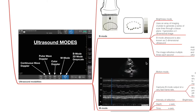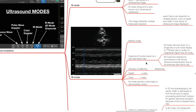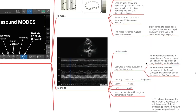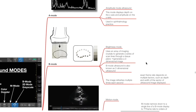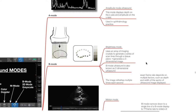Ultrasound modalities include A mode, B mode, M mode, and Doppler modes among others. A mode (amplitude mode) displays depth on the x-axis and amplitude on the y-axis and is used in ophthalmology practice. B mode (brightness mode) uses an array of imaging crystals to generate a series of scan lines through a tissue plane to generate 2D images. B mode ultrasound is also known as two-dimensional ultrasound; the image refreshes multiple times each second, with the exact frame rate depending on factors such as depth and width of sector.